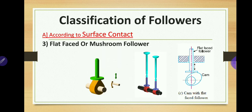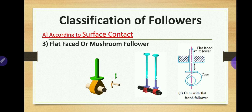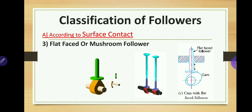The third type is a flat faced or mushroom follower. When the contacting end of the follower is perfectly flat faced, it is called a flat faced follower. The side thrust between the follower and guide is much reduced in this case — only the side thrust due to friction between the contacting surface and cam remains. The relative motion between surfaces is sliding, causing a small amount of wear, which can be reduced by offsetting the axis of the follower. Flat faced followers are generally used where space is limited, such as the cams that operate the valves of automobile engines.